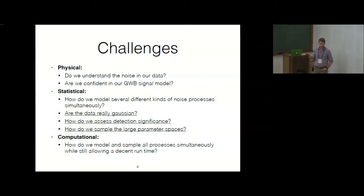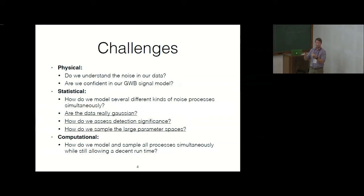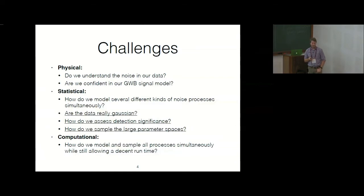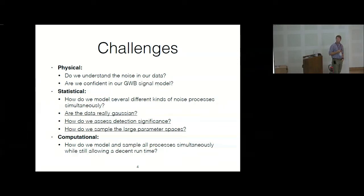Are we confident in the gravitational wave background signal model? We model this as a power law, but we know for certain it's not a power law all the way to really low frequencies — we're just not sure where it cuts off. You don't just have two isolated black holes merging; you have two galaxies merging with lots of stars and gas that drive the black holes to the regime where gravitational wave radiation takes over. We don't know exactly when that turns off. So we allow the gravitational wave model more flexibility, letting the data tell us where turnovers in the spectrum should be.